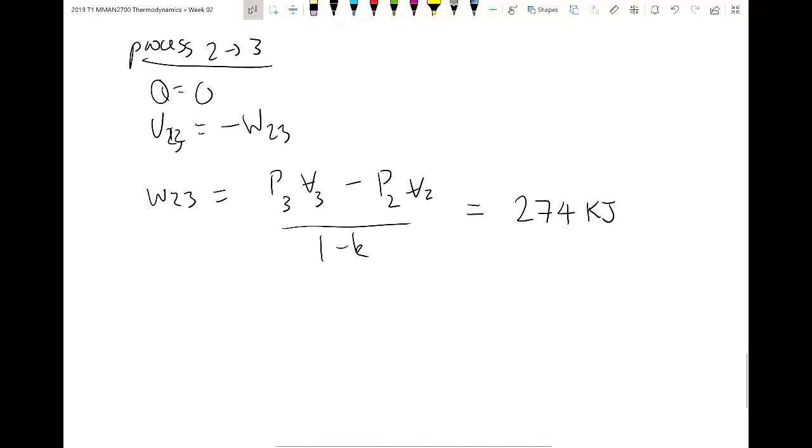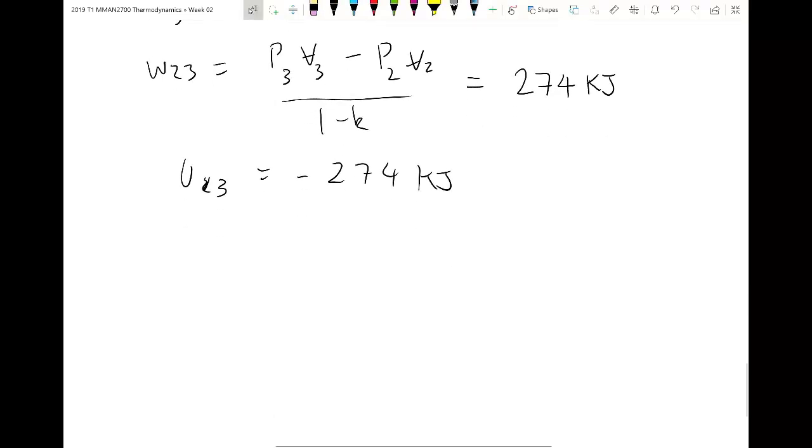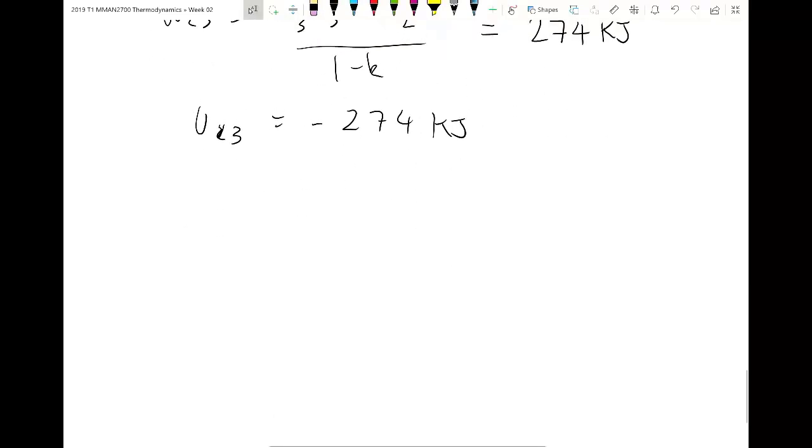Cool. And the internal energy, therefore, is negative of the work. So we should get negative 274 kilojoules. All right. Final process. And then we're pretty much done with the question.